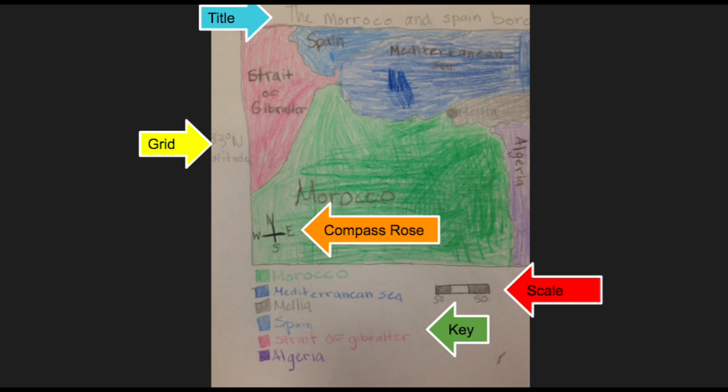This is my map. It has a title, grid, compass rose, scale, and a key.